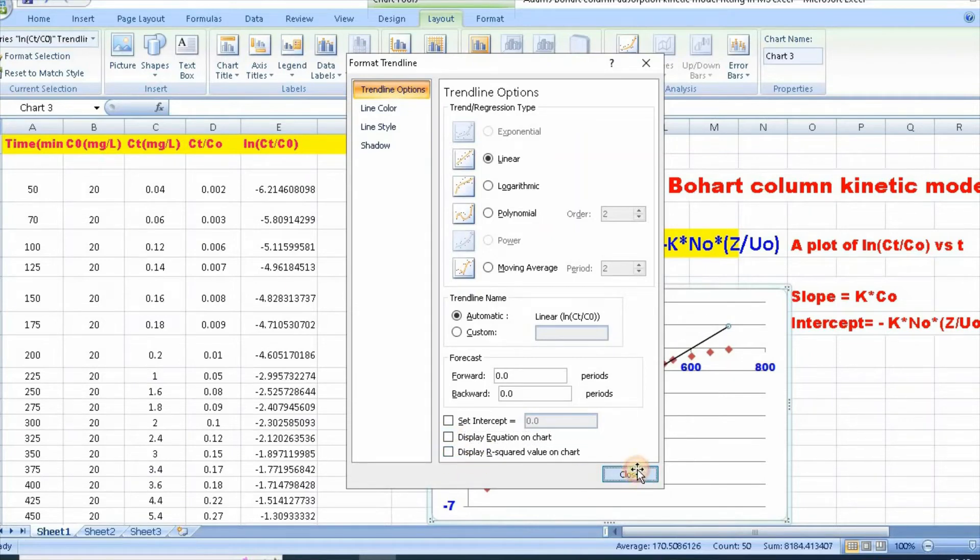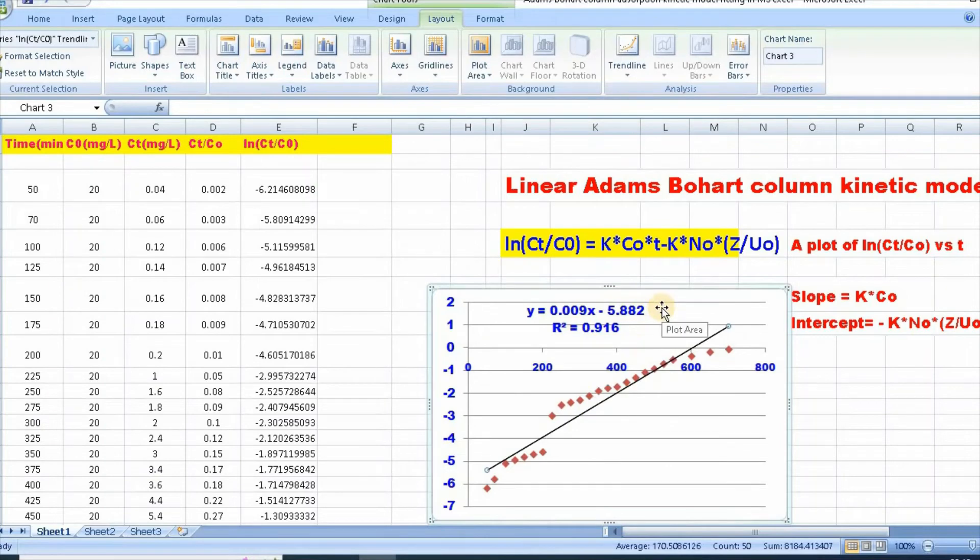So, you will get this equation and R square value. So, from this equation, we see that slope equal to 0.009 which is equal to K into C0. Therefore, we can calculate K values. And from intercept we get minus 5.882.